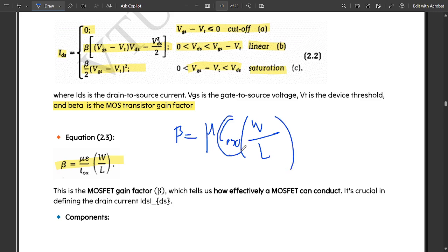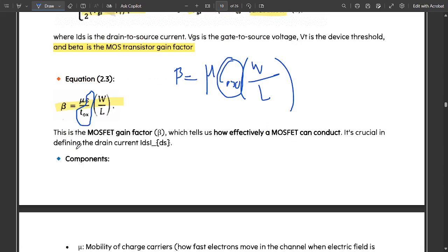Where this COX is, that COX is equal to epsilon OX divided by TOX. So see here epsilon divided by TOX, that is equal to the oxide capacitance here. That is basically the gate capacitance in case of this gain factor.